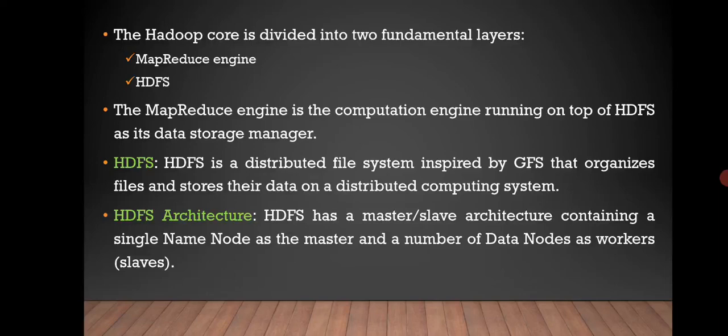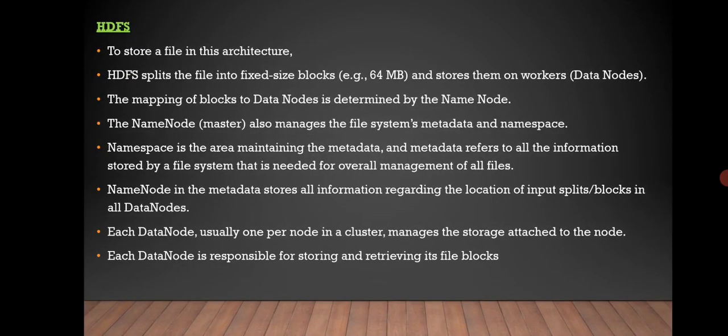HDFS is a distributed file system inspired by GFS that organizes files and stores their data on a distributed computing system. HDFS has a master-slave architecture containing a single name node as master and a number of data nodes as workers, that is slaves. To store a file, HDFS splits the file into fixed size blocks and stores them on workers that is data nodes. The mapping of blocks to data nodes is determined by the name node. The name node also manages the file system metadata and namespace. Namespace is the area maintaining the metadata, which refers to all the information stored by the file system needed for overall management of all files. Each data node, usually one per node in a cluster, manages the storage attached to the node and is responsible for storing and retrieving its file blocks.